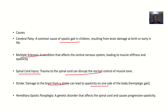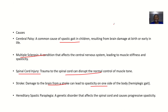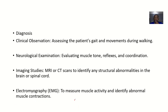Stroke-related spasticity affects one side of the body, which is why it's called hemiplegic — you can see how the leg and arm on just one side are affected. There is also hereditary spastic paraplegia, a genetic condition that affects the spinal cord and causes progressive spasticity.